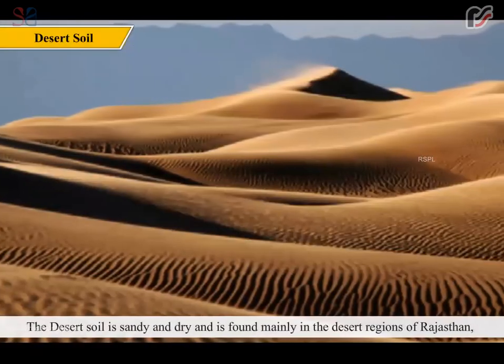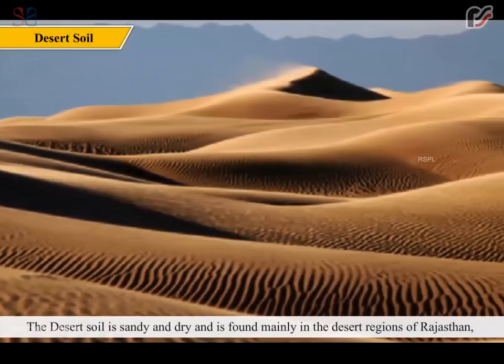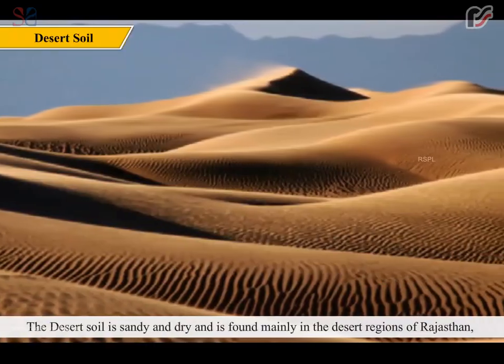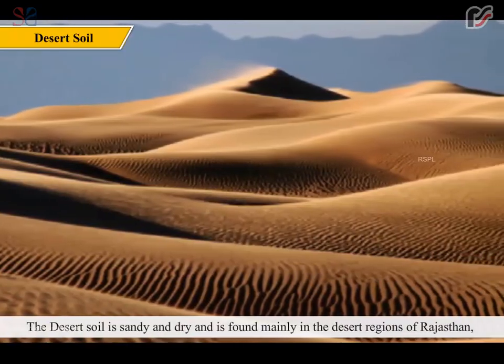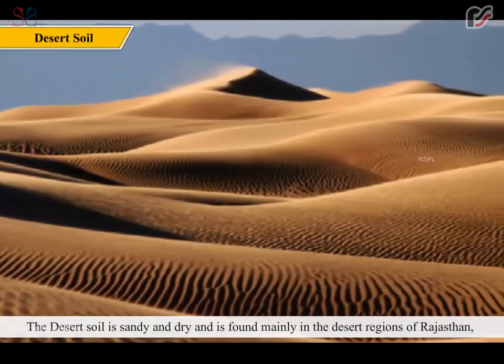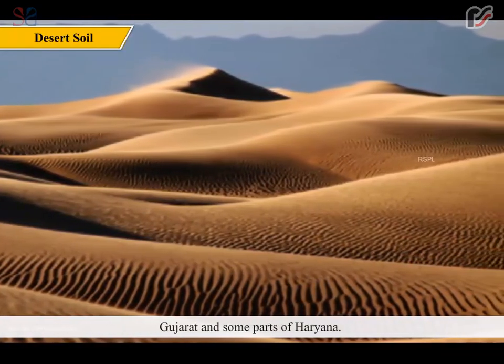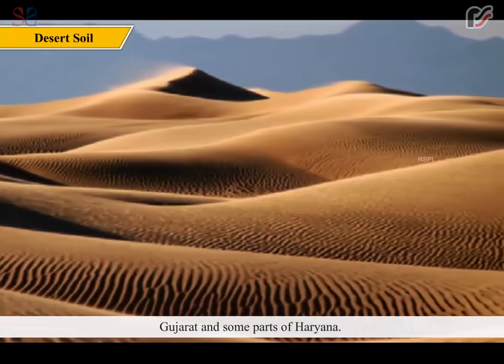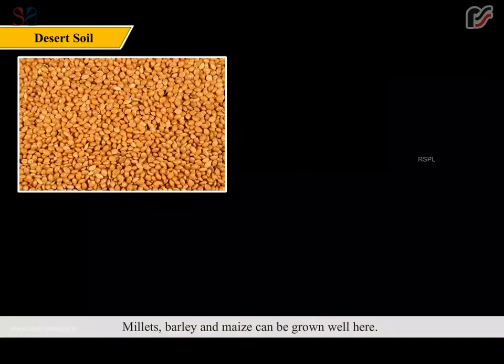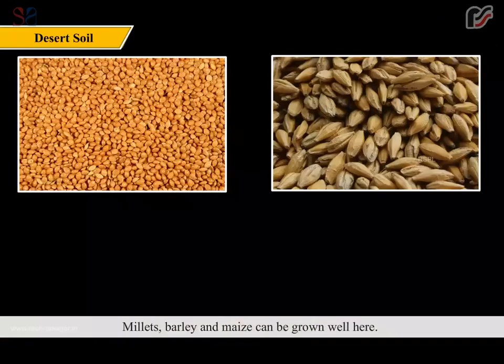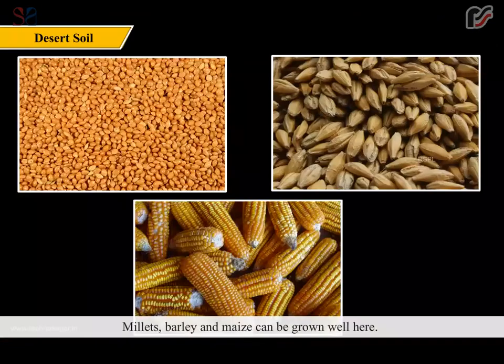The desert soil is sandy and dry and is found mainly in the desert regions of Rajasthan, Gujarat and some parts of Haryana. Millets, barley and maize can be grown well here.